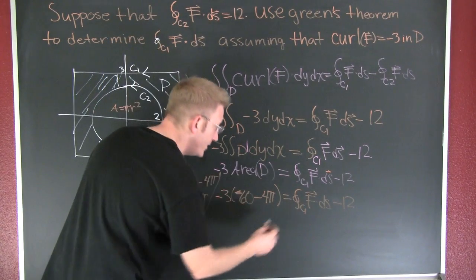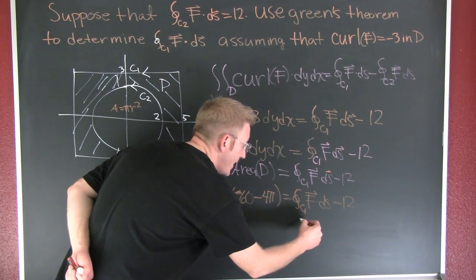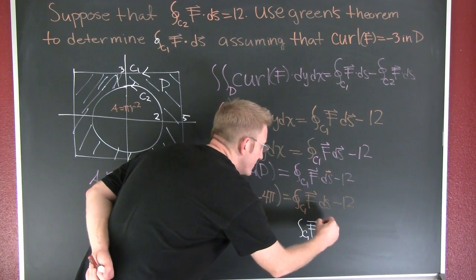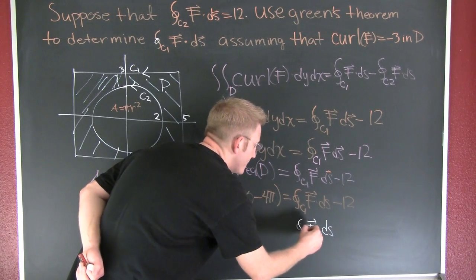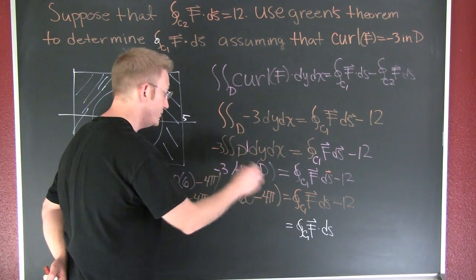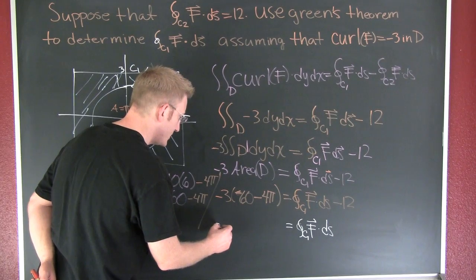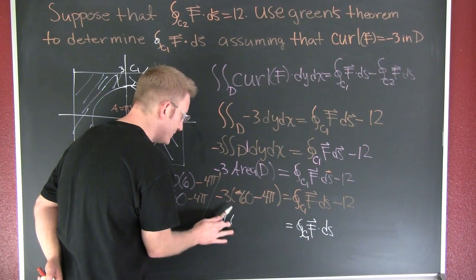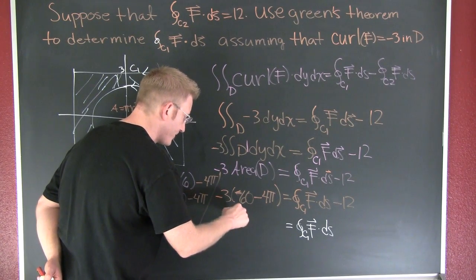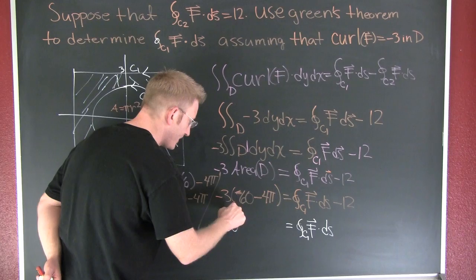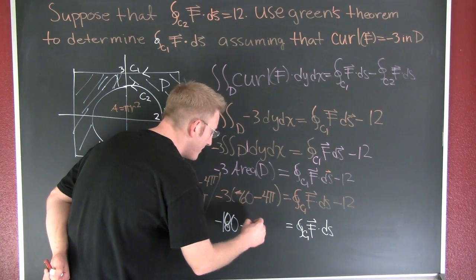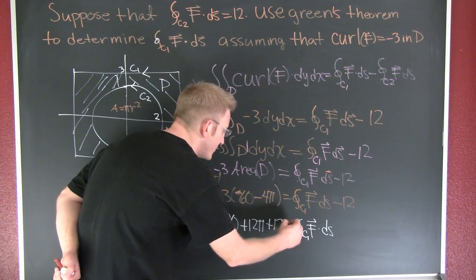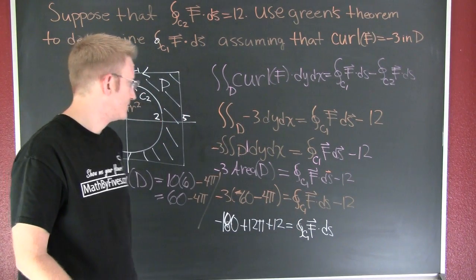Let me finish him. So then my integral about my closed path C1 F dot dS is going to equal minus 180, not 60, 180. Plus 12 pi plus 12.